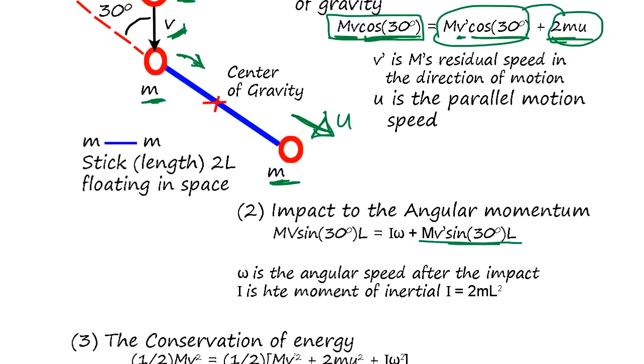This momentum lost is going to be I omega, which is angular speed times moment of inertia. In this case, 2mL squared. So this is angular momentum.